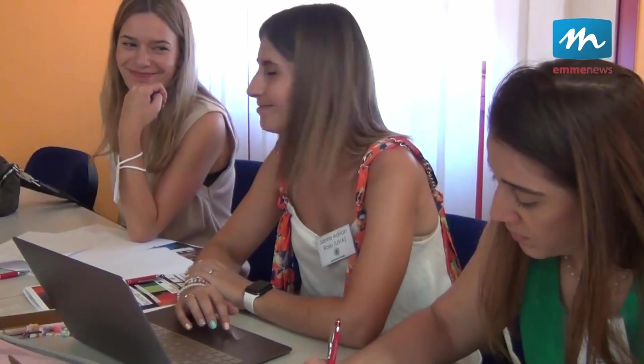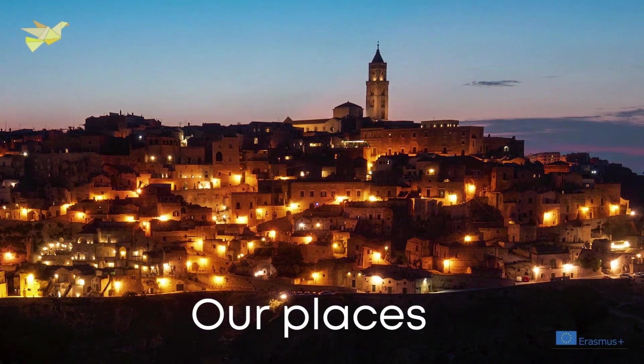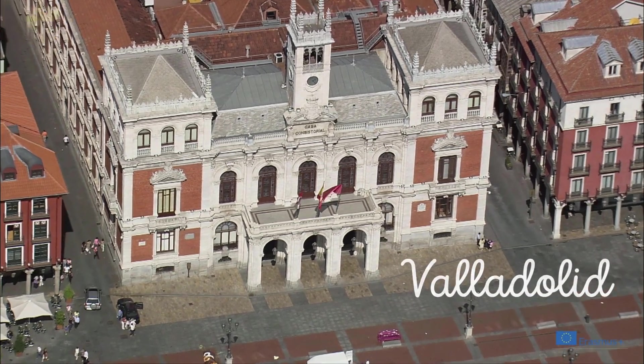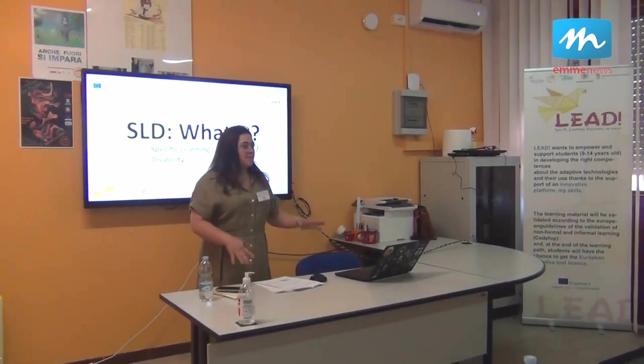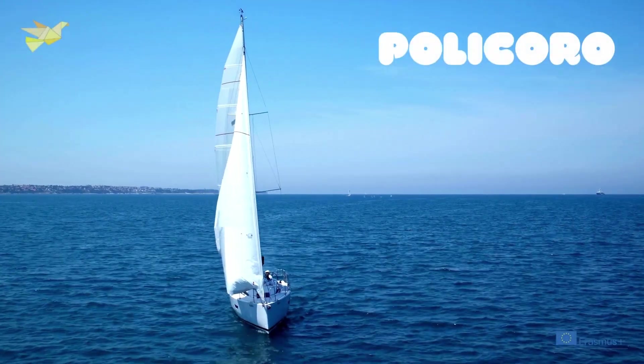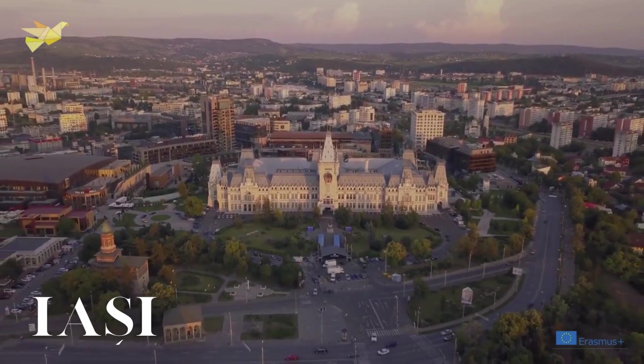The partnership is made up of Informer, an Italian training and social research organization, University of Valladolid, Spain, the Belgian organization Lifelong Learning Platform, an umbrella that gathers 42 European organizations active in the field of education, training and youth, the schools of Palacordo, Italy, and Iasi, Romania.